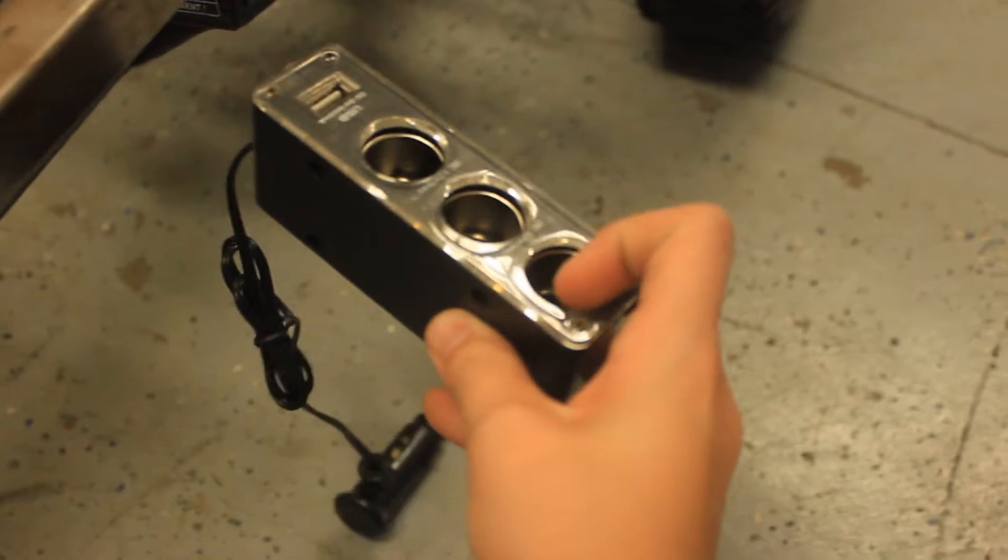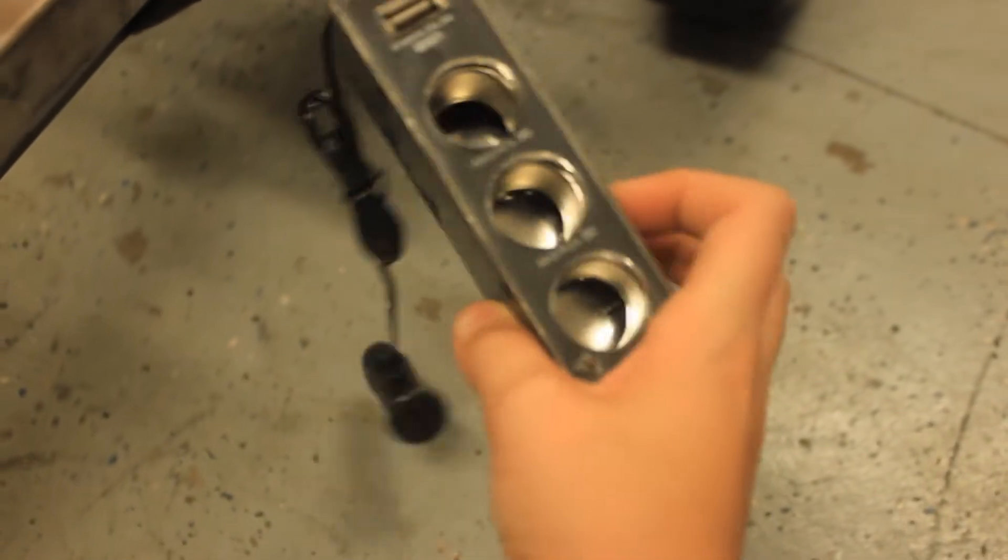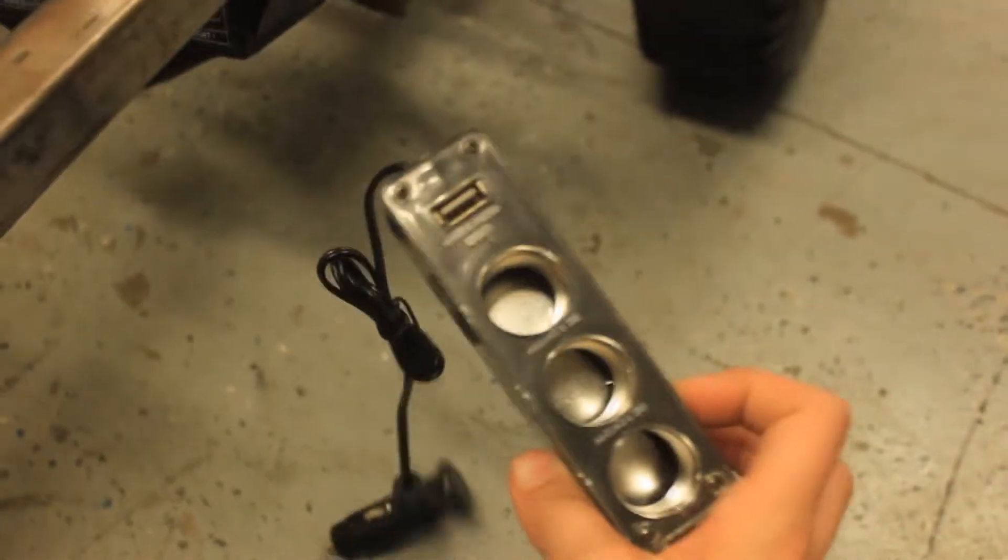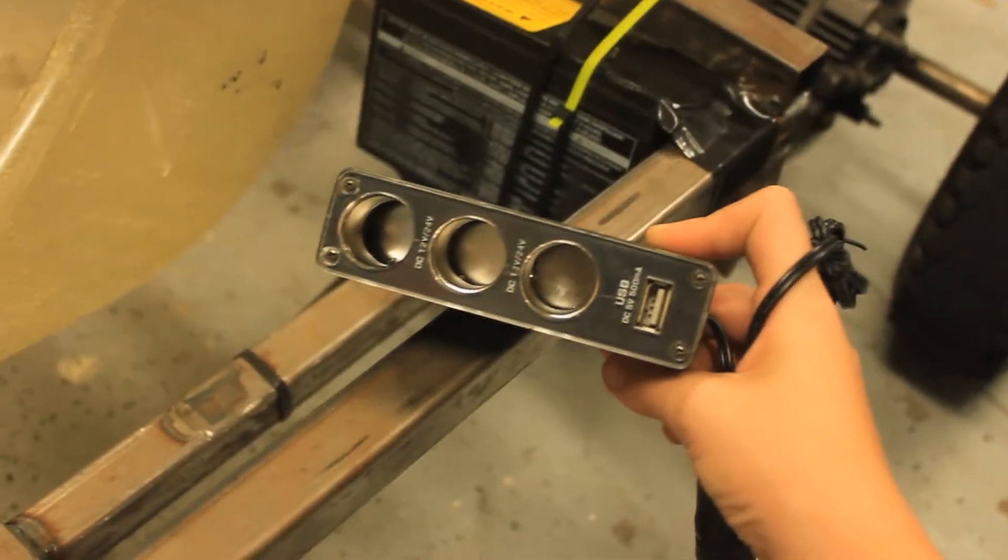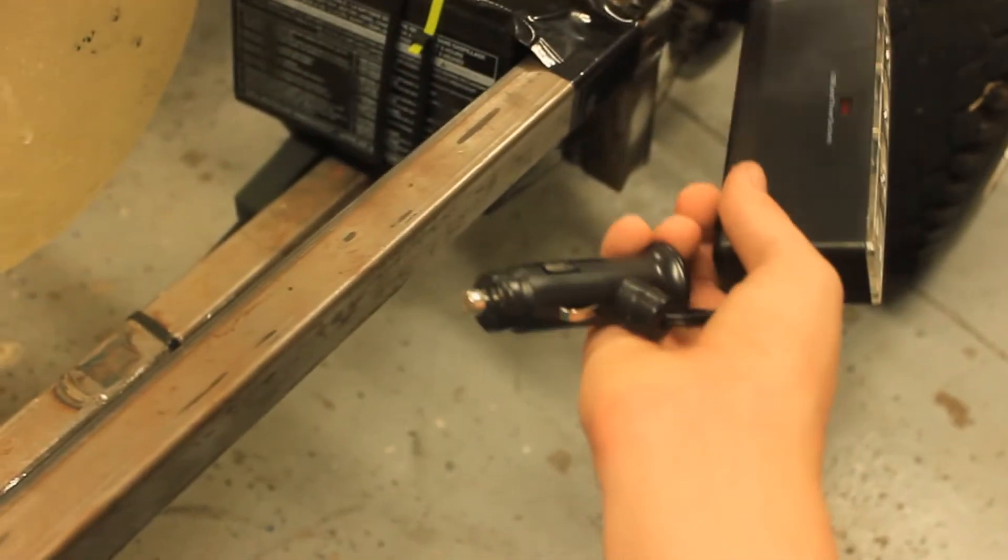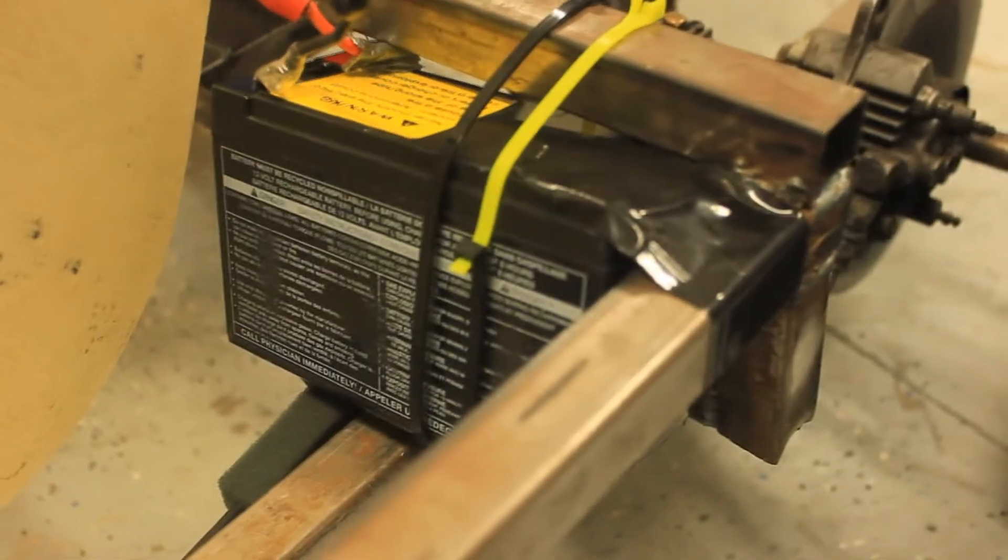So this right here is the hub that I chose. It actually has 3 DC outlet hubs. These are the same outlets that are on the car, and then it has a 500mAh USB port. So the only requirements for the hub is to make sure that it runs off 12 volts, and then you also need something to attach it to the go-kart with.